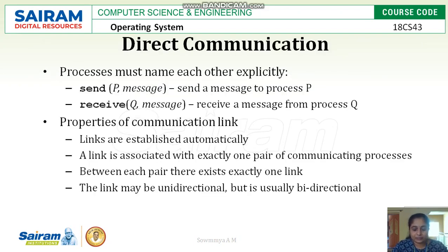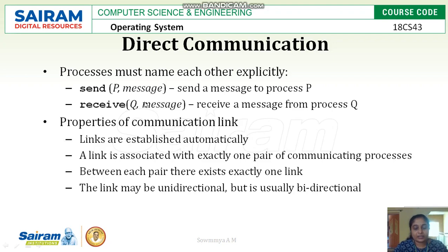In message passing, we have direct communication. In direct communication, the process will send the message directly to another process. The process must specify the address or process ID and the message of the destination process. So here, send(P, message) sends a message to process P, and receive(Q, message) receives a message from process Q.